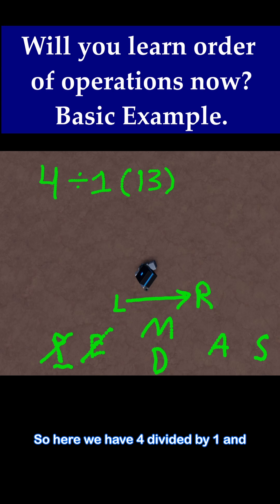So here we have 4 divided by 1. And then when you see 1 parentheses 13, that's actually 1 times 13. So now because we're going from left to right, this division is left. So it happens first.